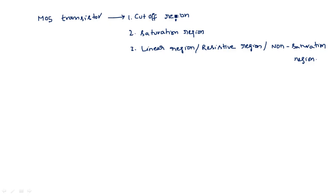Cutoff region means the transistor is completely in off state — it is simply acting as an open circuit, there is no connection between input and output. Saturation region is where, depending upon the applied voltage VDS, the transistor enters into saturation; even if you increase the voltage the current will not increase — the current becomes constant. Linear region, or resistive region, or non-saturation region is where the transistor simply acts like a resistor where voltage increases and current also increases — the current is proportional to the applied voltage.